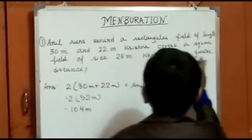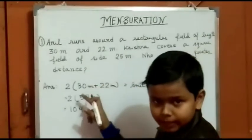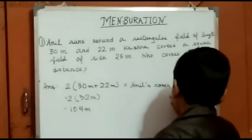And Krishna covers a square field of side 25 m. Now square is 4S.